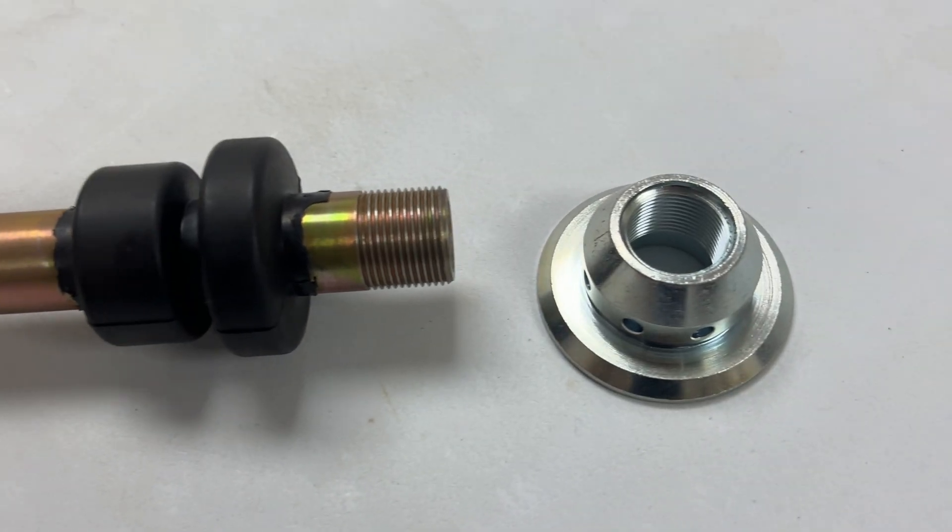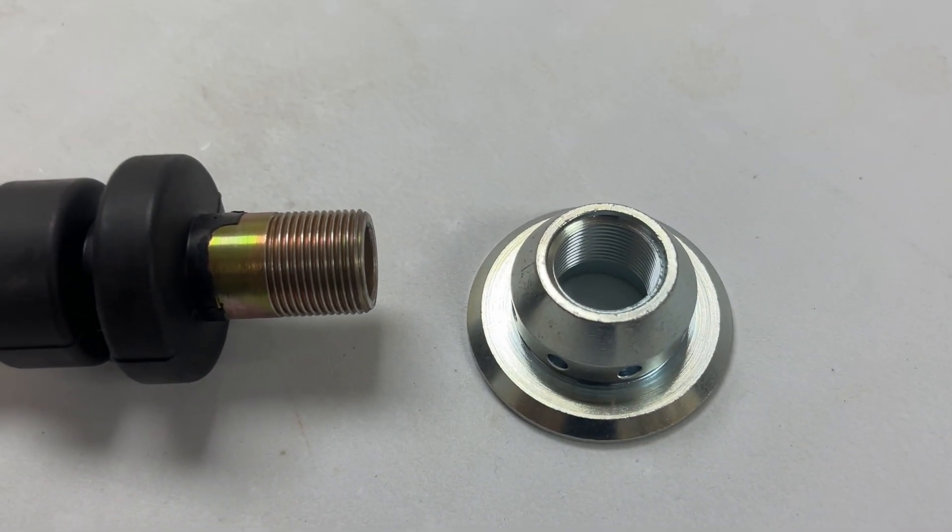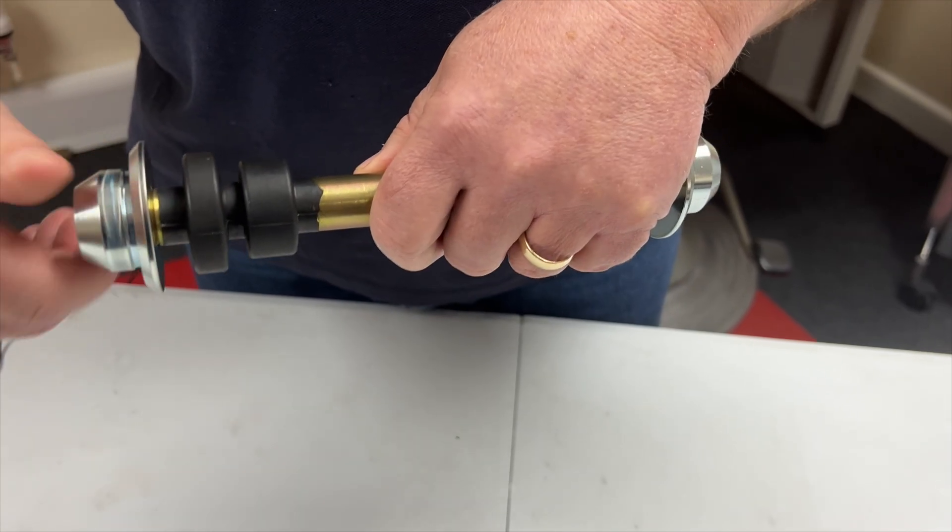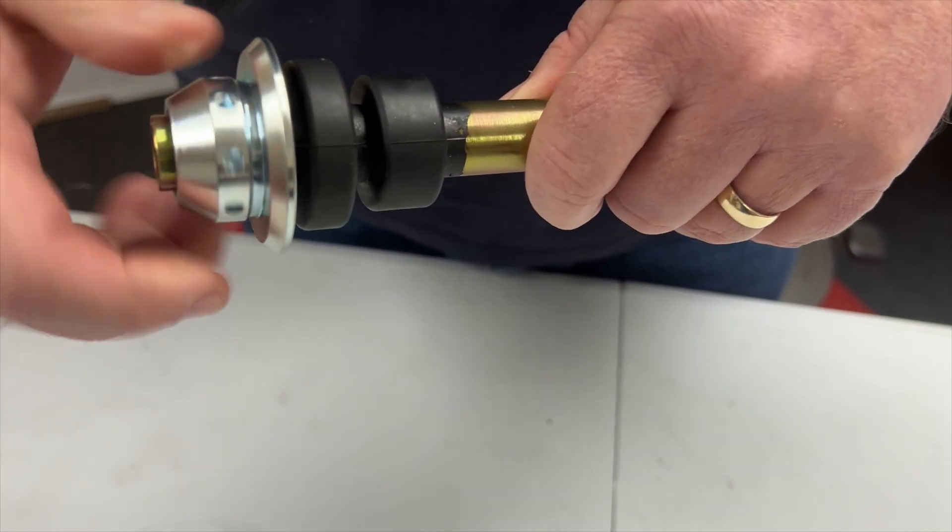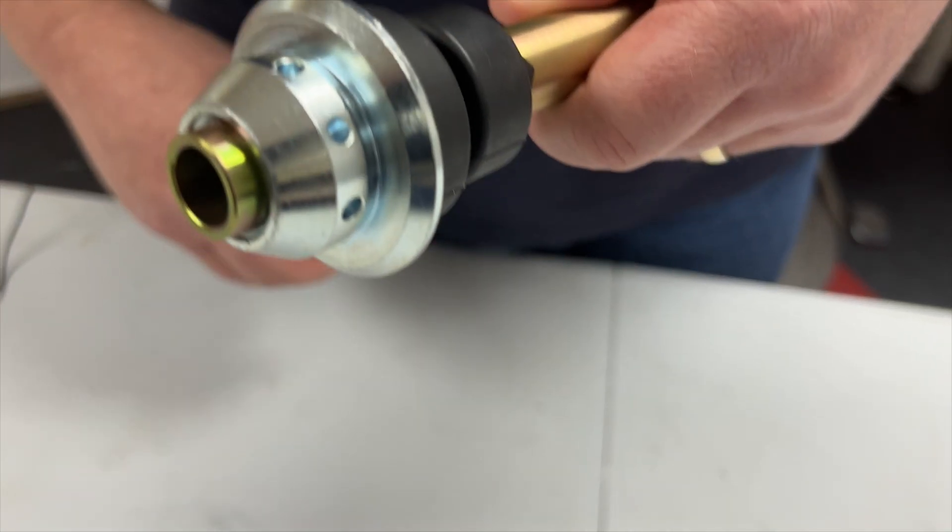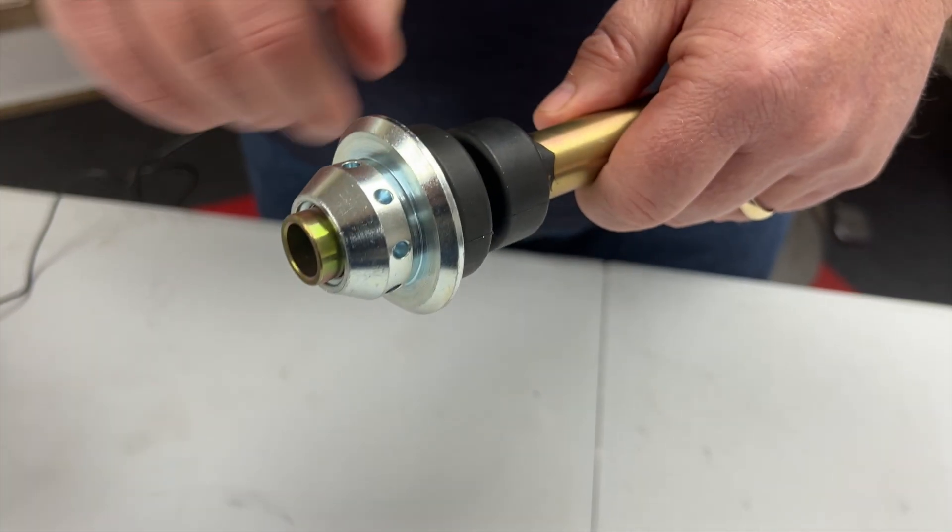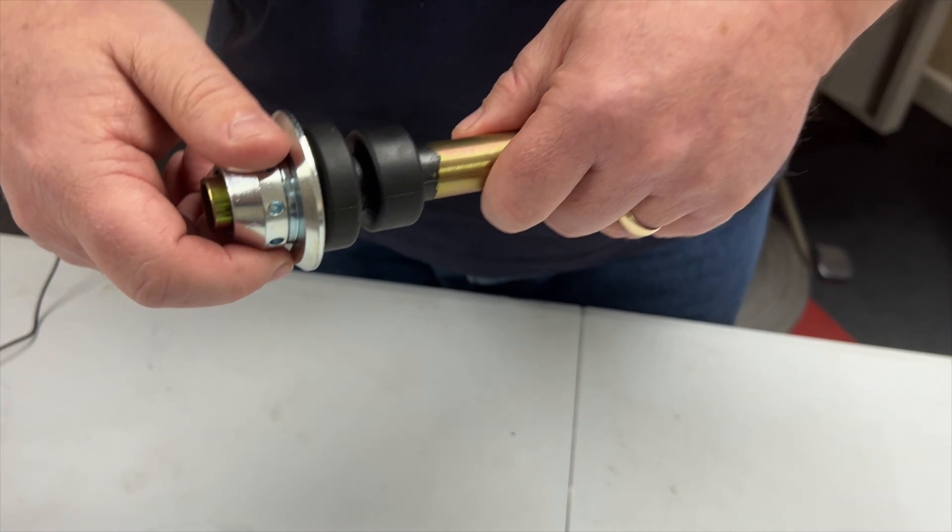Now logic suggests that the adjuster end goes on the end portion with the missing thread. That's not the case. If you actually screw that on to that section it will go up, but you end up with that protruding from there.